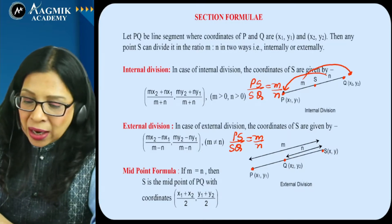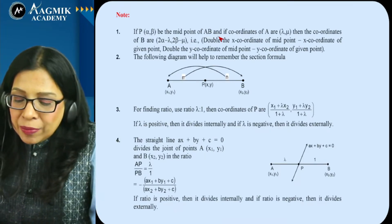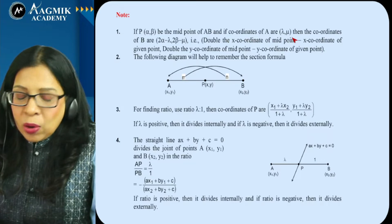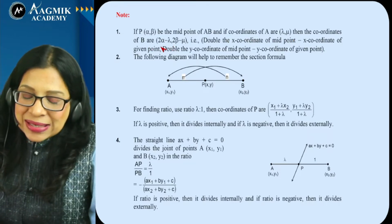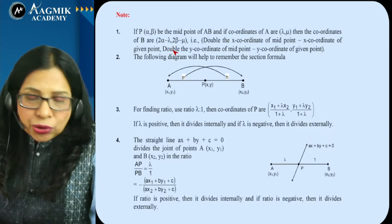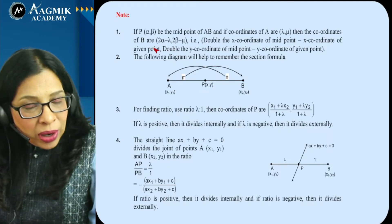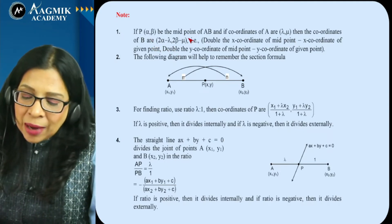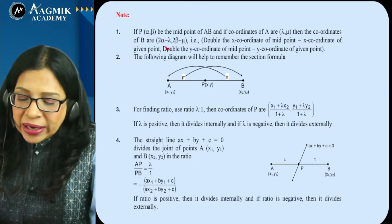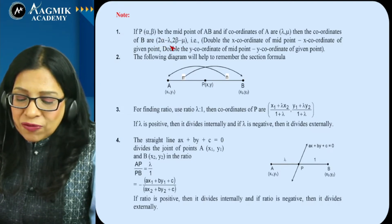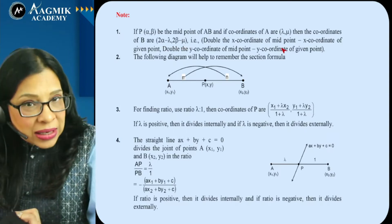If P is the midpoint of AB and you know A's coordinates and need B's, you can either assume B's coordinates and apply the midpoint formula, or use the direct result: if P has coordinates (α, β), then B's coordinates are (2α − x_A, 2β − y_A).